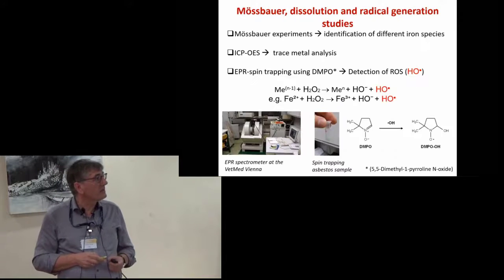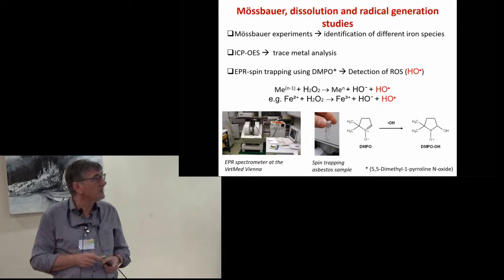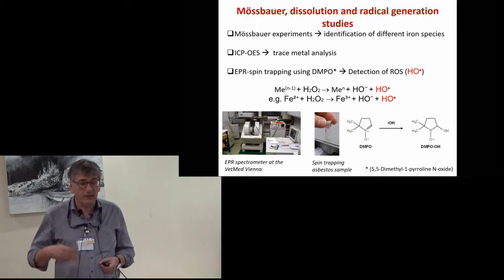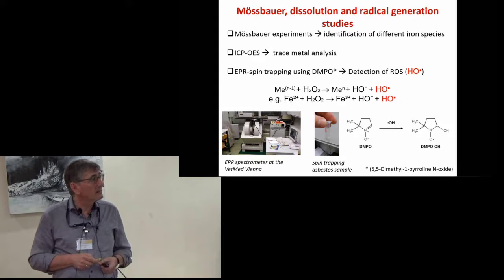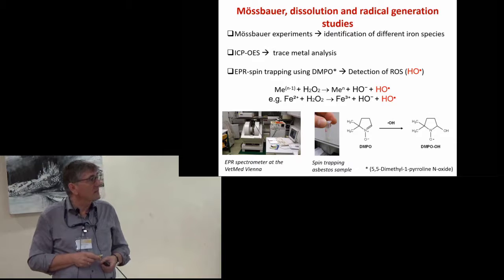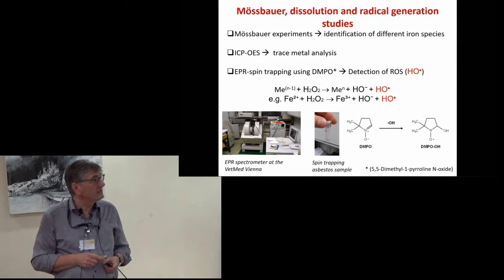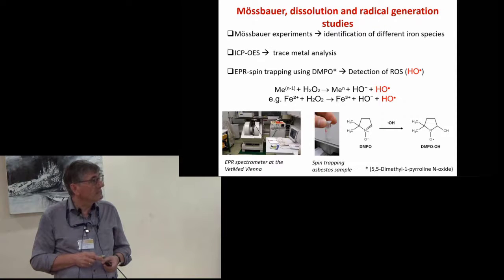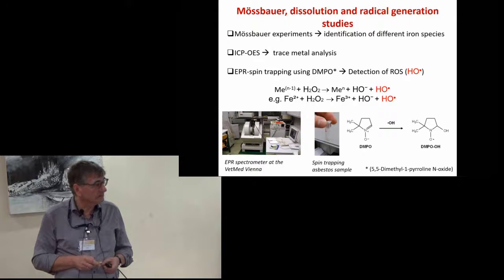This question was tackled by dissolution experiments and we used different methods to characterize the results. For example, Mössbauer experiments gave the type and amount of different iron species. Optical emission spectroscopy was used for trace metal analysis. Electron paramagnetic resonance gave information about radical formation with the help of spin trapping DMPO, which interacts with the radicals forming metastable DMPO-OH that could be quantified by EPR measurements.